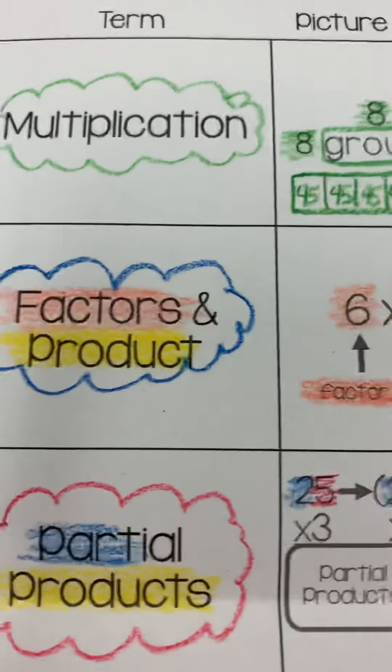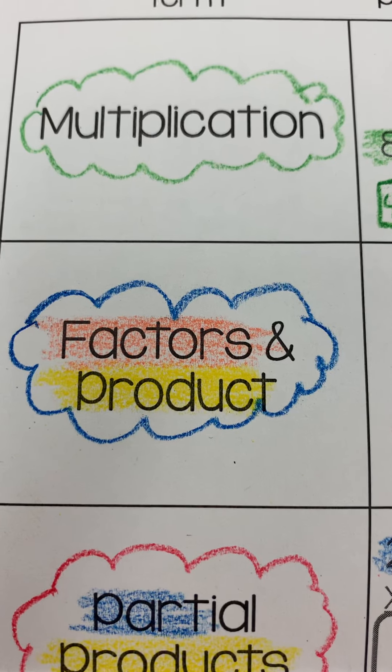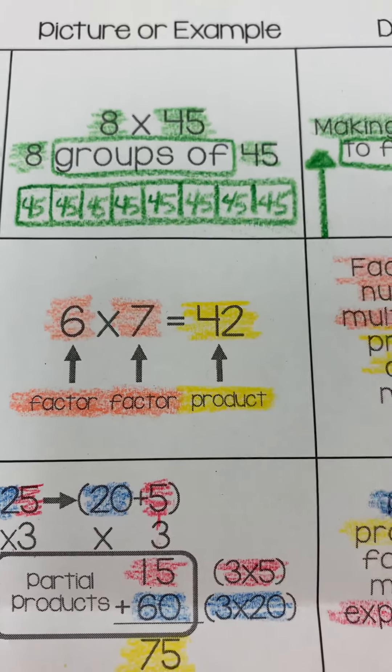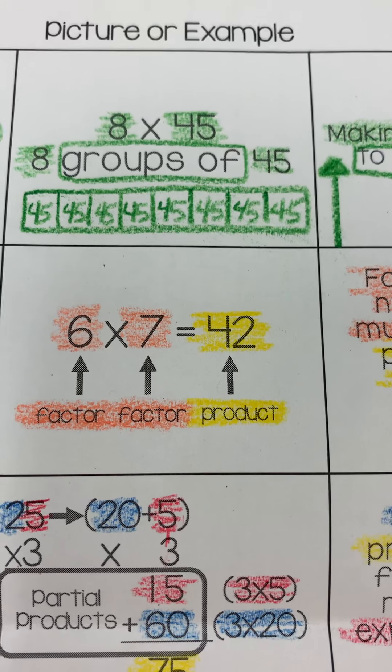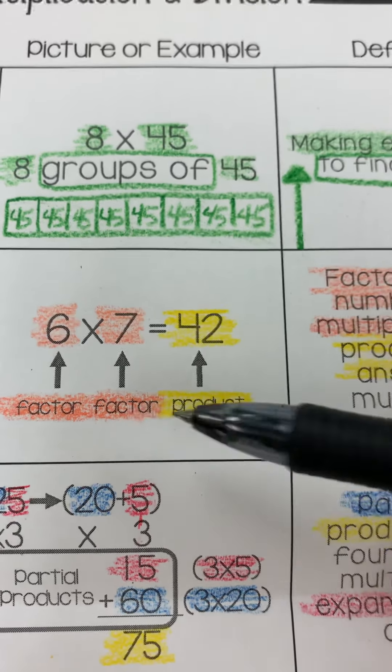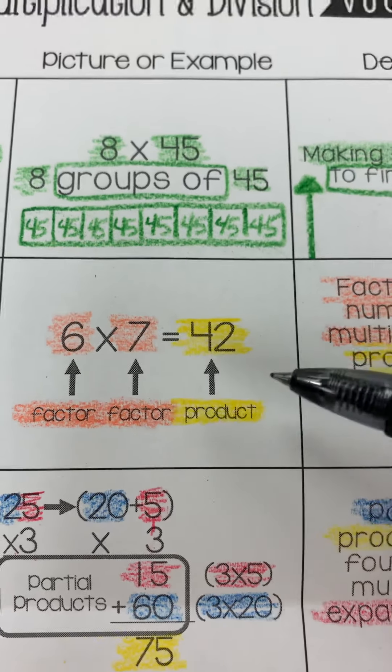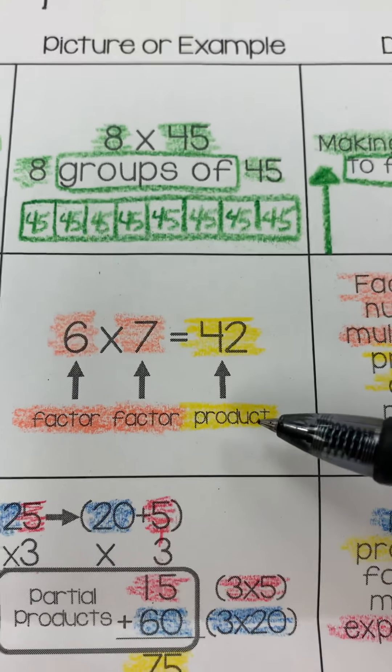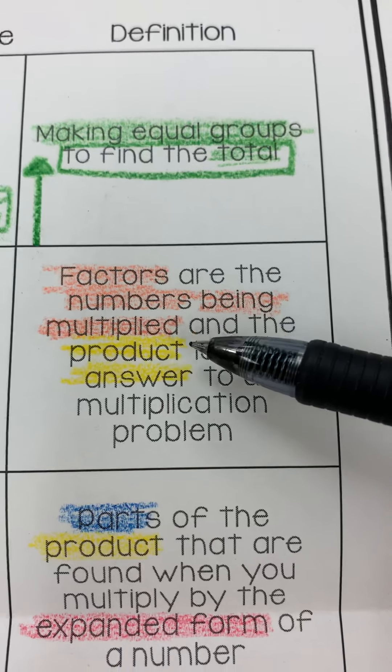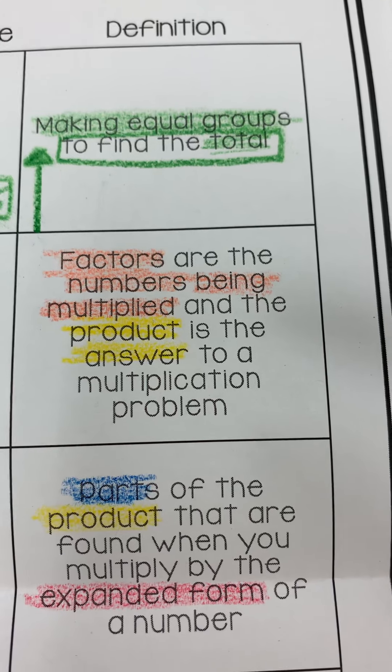In multiplication, you're going to have factors and products, and I highlighted these with two different colors. Factors are the numbers in the equation. Just like when you go to Walmart, you get a product that's made at the factory. So remember, the factors make the product. The product is the answer in a multiplication problem. Factors are the numbers being multiplied, and the product is the answer to a multiplication problem.